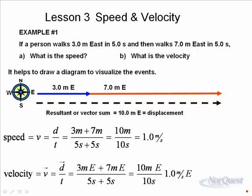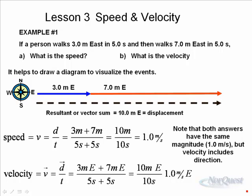Now notice that they both have the same magnitude, that is one point zero meters per second. But velocity must also include the direction. And this is very important in the next example, which is not quite as uniform as this first example.